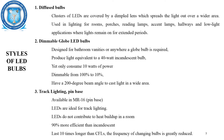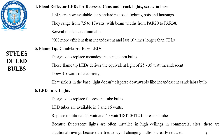Dimmable globe LEDs range from 100% to 10% dimming and have a 200-degree beam angle to cast light in a wide area. For track lighting or pin base, the MR16 LEDs are ideal; they do not contribute to heat build-up in the room, are 90% more efficient than incandescent lamps, and last 10 times longer than compact fluorescent lamps. Reflector LEDs for recessed cans and track lighting range from 7.5 to 17 watts with beam widths up to PAR38, are 90% more efficient than incandescent, and last 10 times longer than CFLs.